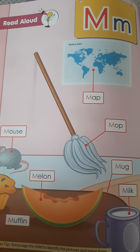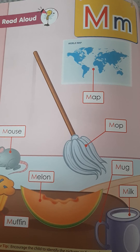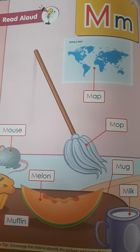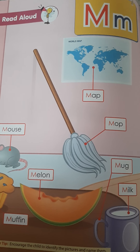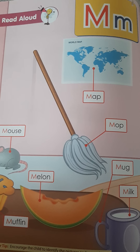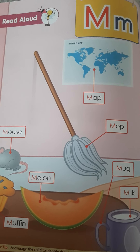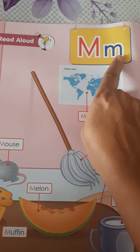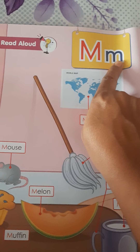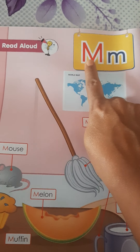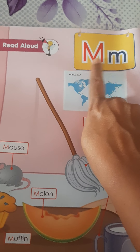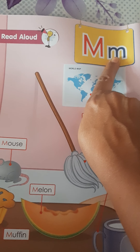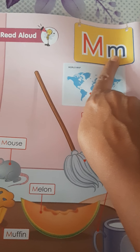Like this we have to recite all the alphabets. Here capital M is given and small m is given. This is the capital M and this is the small m. What is the sound of letter M?